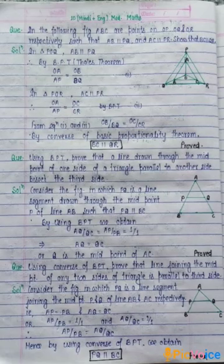By using basic proportionality theorem we obtain AP by PB is equal to AQ by QC. Since P is the midpoint of AB, therefore one upon one, therefore AQ is equal to QC, and this represents that Q is the midpoint of AC.